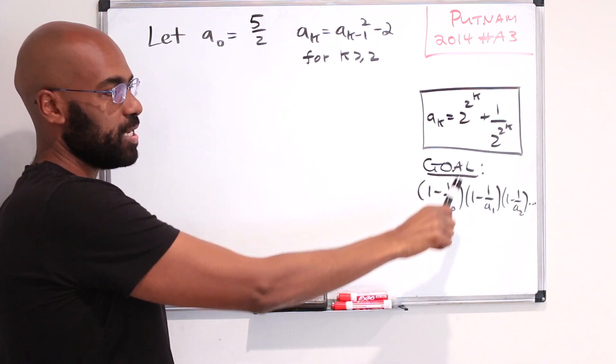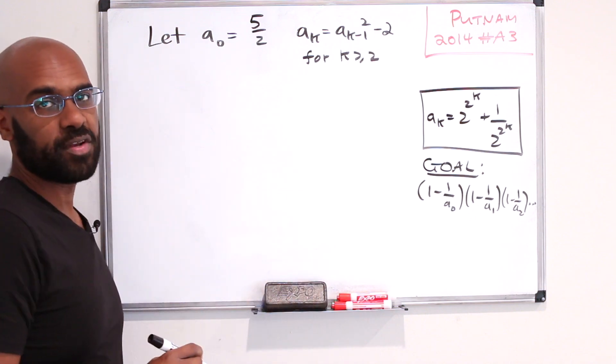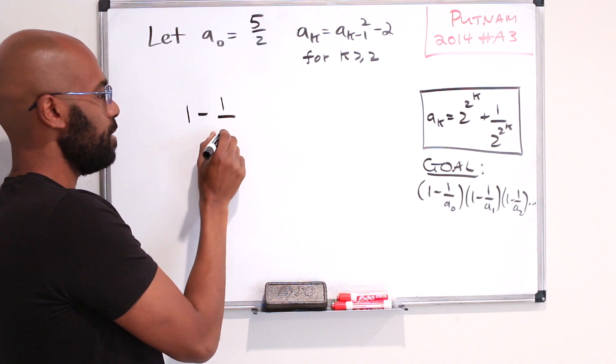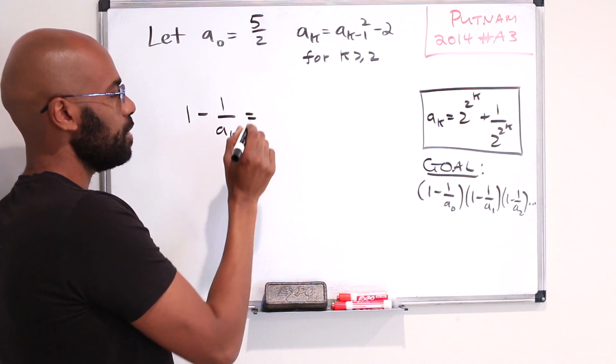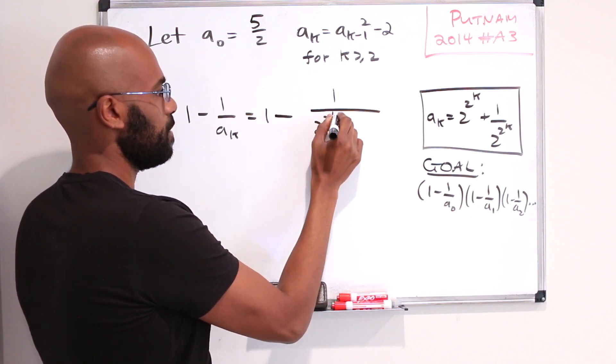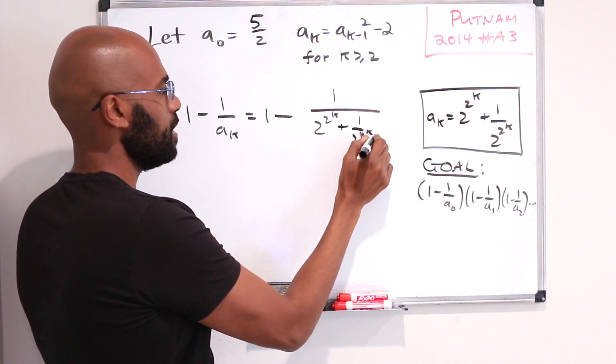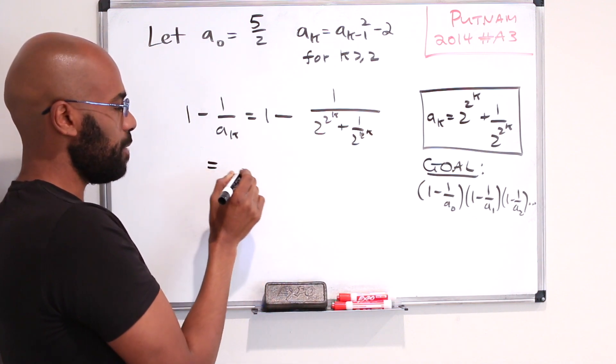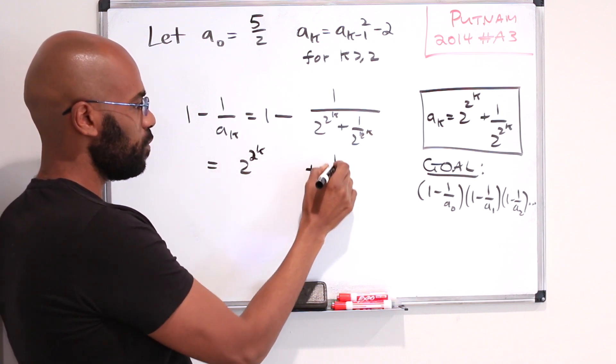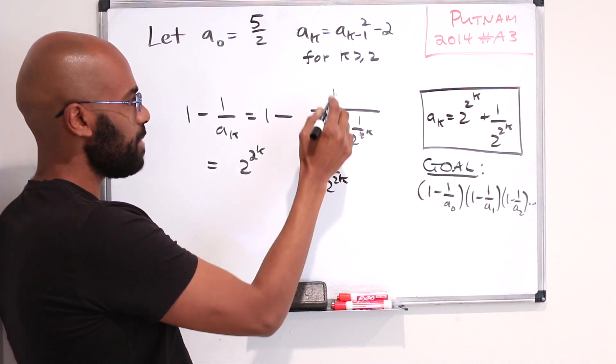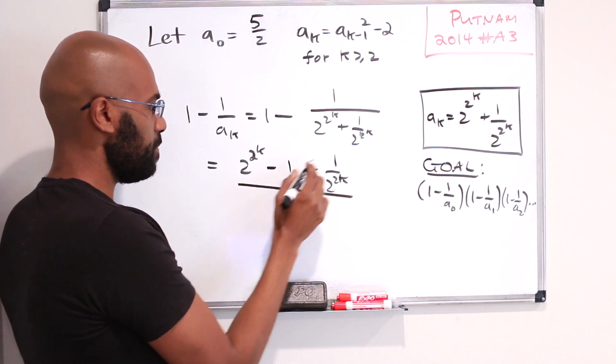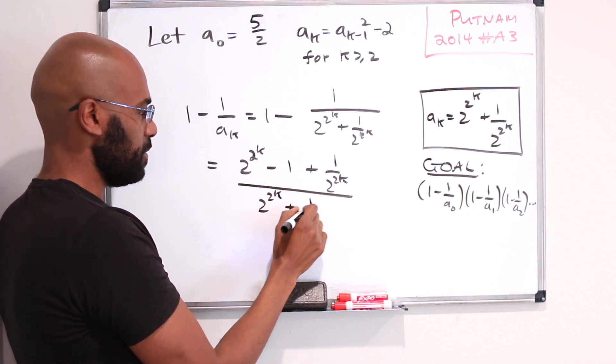So I've written the general term for a_k here. Our goal is to figure out what this infinite product is over here. So let's look at a prototypical term of this. It's gonna look like 1 minus 1 over a_k which is 1 minus 1 over all of this. And so one thing we can do now is write this with a common denominator. If we do that, we'll get 2^(2^k) plus 1 over 2^(2^k) and then we'll have a minus 1 from the contribution of this term here in the middle divided by that denominator that we had before.